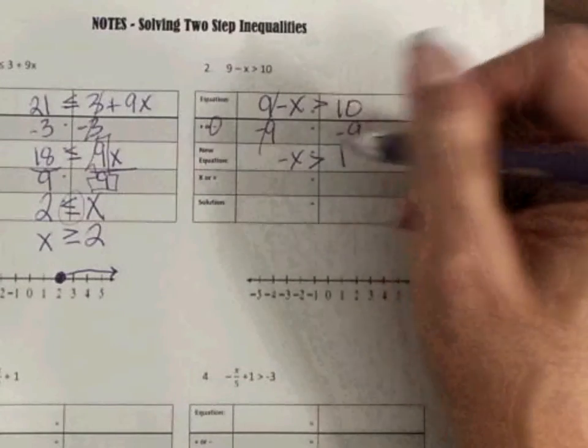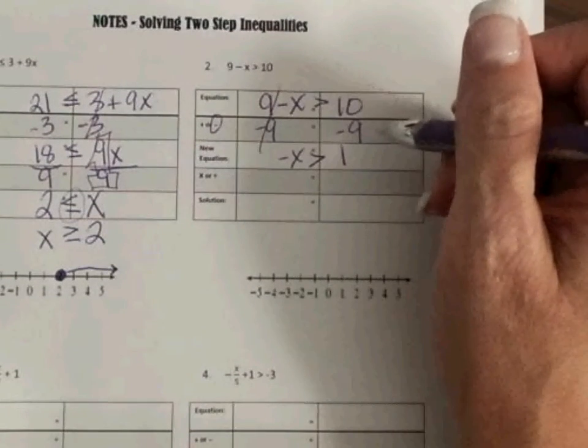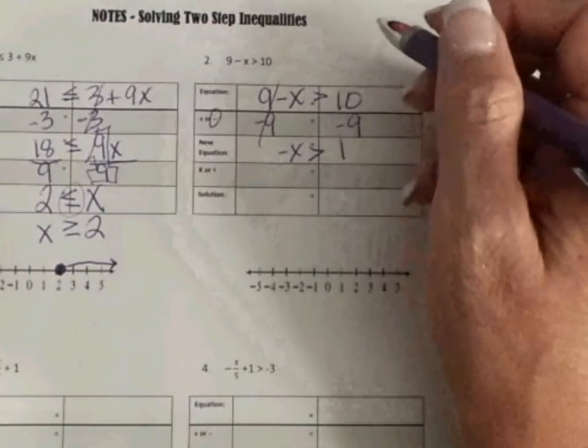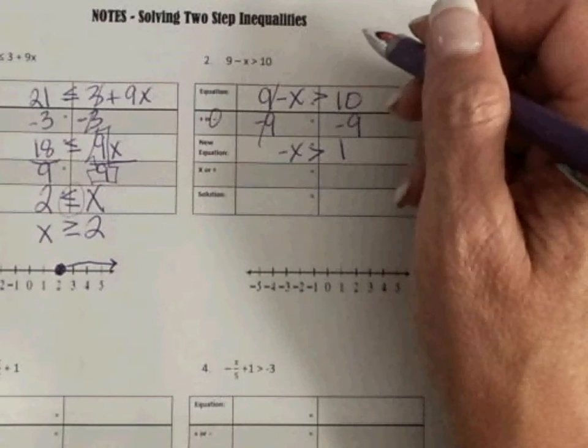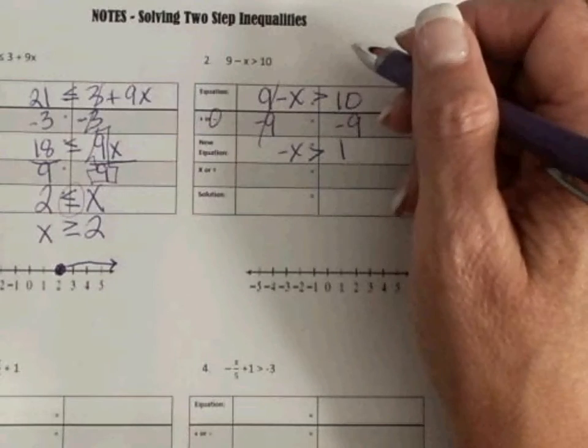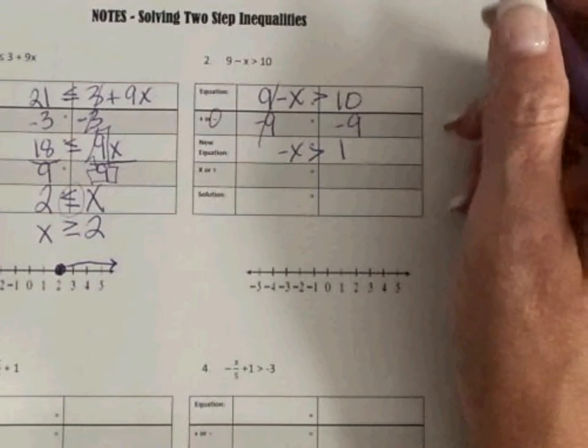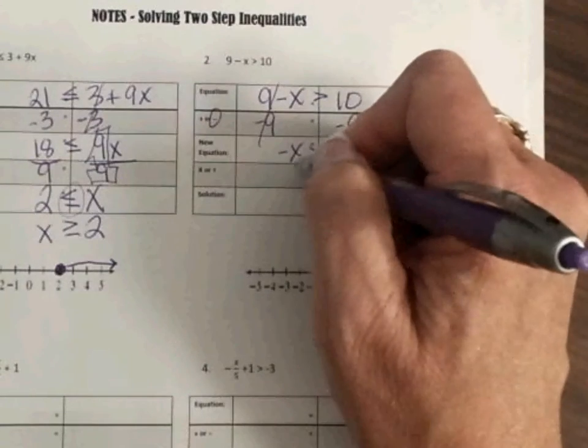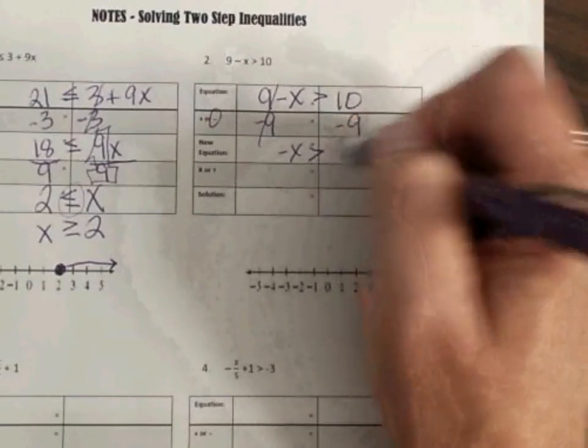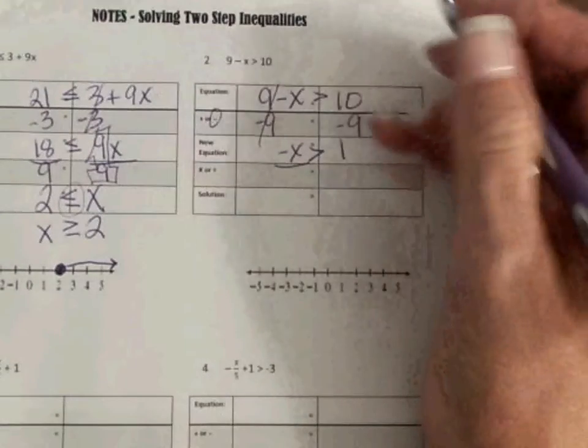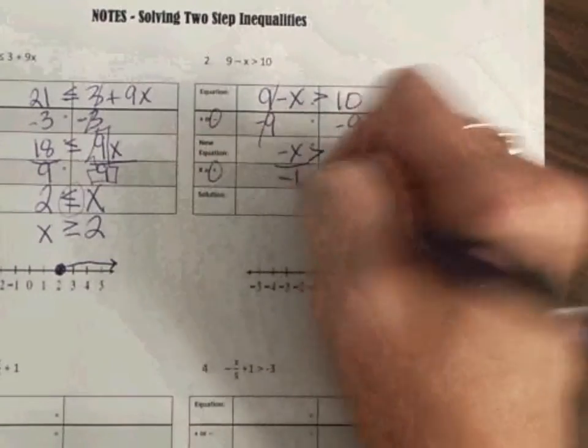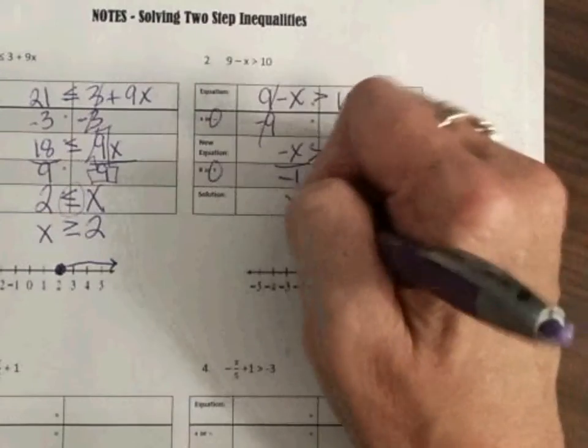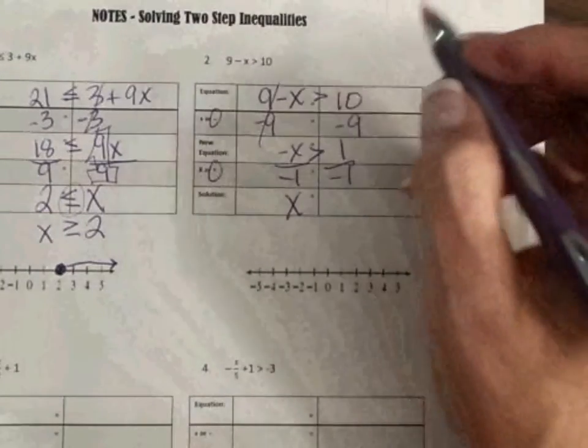So now I have a negative x. I want to know what positive x is. So in order to get rid of that negative, because even though there's not a number in front of it, I know that that is 1x, because there's 1x. So I'm going to divide both sides by negative 1. So these two x's, remember, if I'm dividing by two negatives, that becomes a positive. But remember, in our rules, if we multiply or divide by a negative, we have to flip our sign.